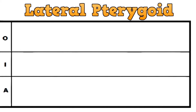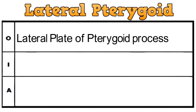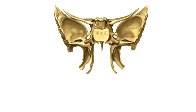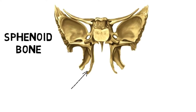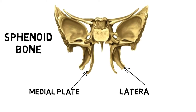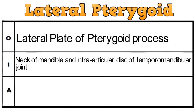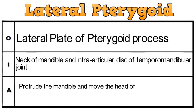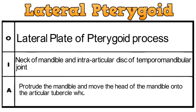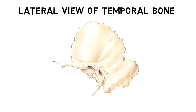The next muscle is the lateral pterygoid, and as the name suggests, it originates from the lateral plate of the pterygoid process. The pterygoid process is present in the sphenoid bone, which has two plates, the medial and the lateral. It gets inserted in the neck of the mandible and the intraarticular disc of the temporomandibular joint. The action of the muscle is to protrude the mandible and move the head of the mandible onto the articular tubercle when the mouth is opened. The articular tubercle is present on the temporal bone.